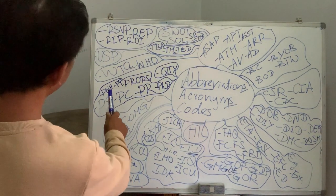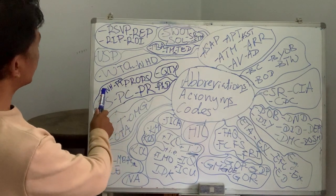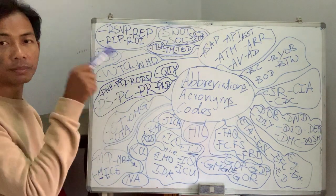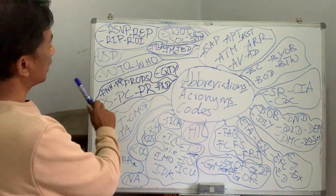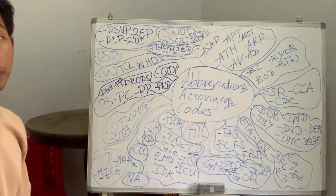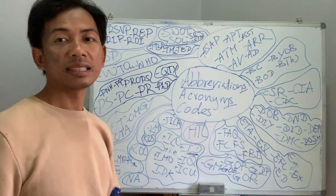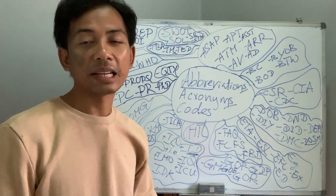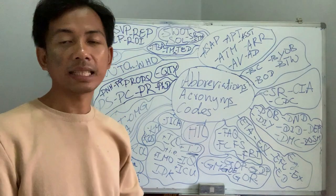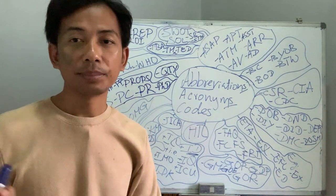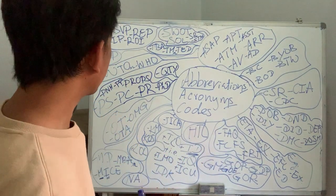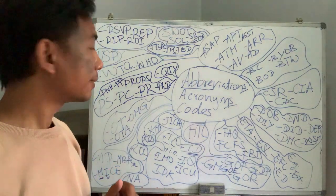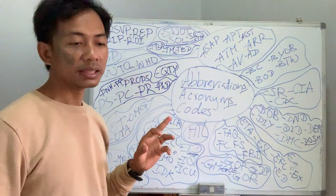PNH — code for Phnom Penh International Airport. PPE stands for Phnom Penh City. PS — post scriptum — if you write an email and at the end you realize you forgot something or want to add something, you put PS at the end and then write a bit more. That is called PS — post scripts, from Latin. PC — personal computer.